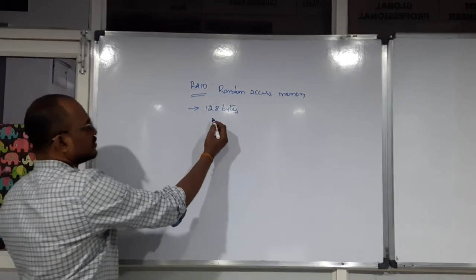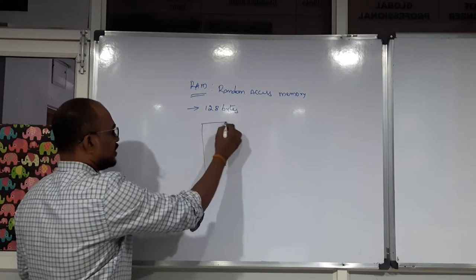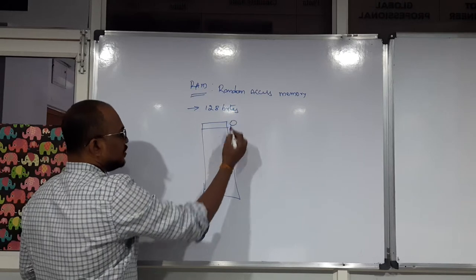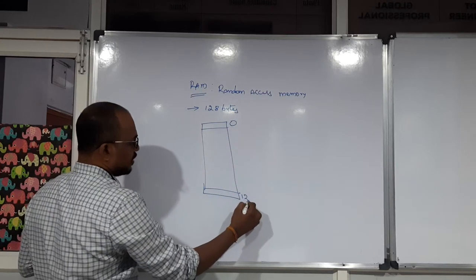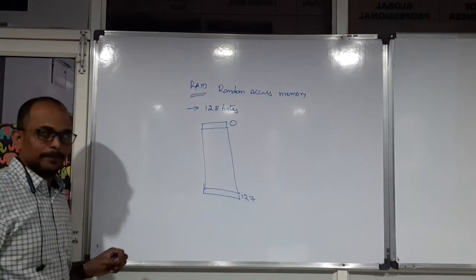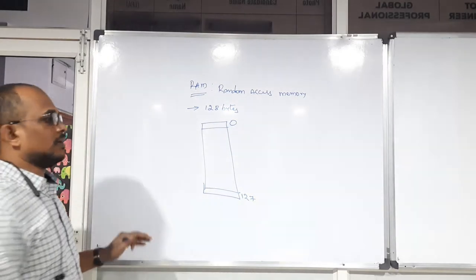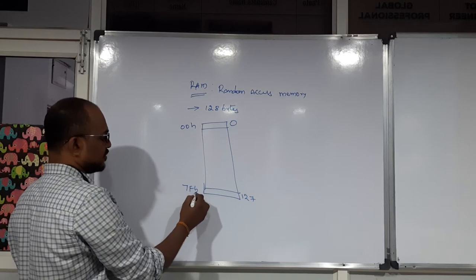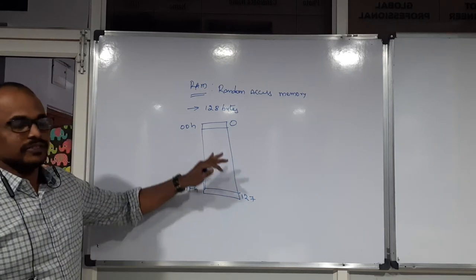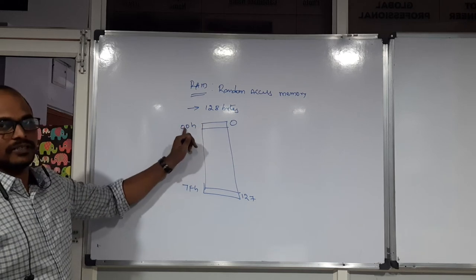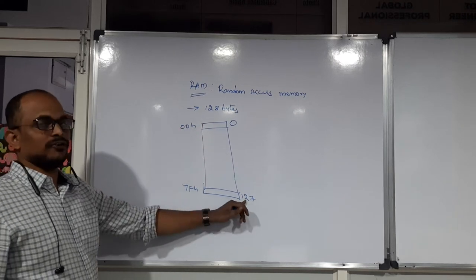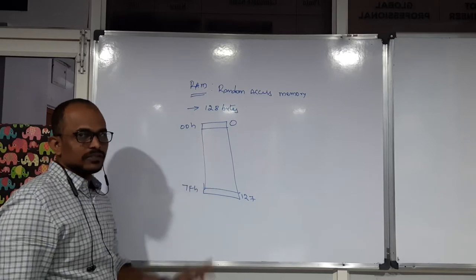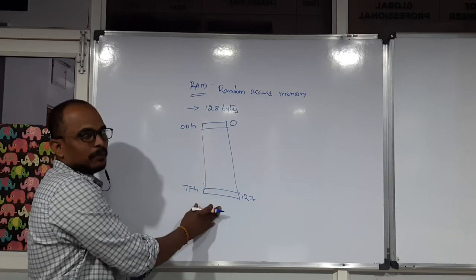You should understand the starting address and ending address of RAM memory. In decimal, 0 to 127 are the memory addresses of RAM. If you want to write this in hexadecimal format, it is 00H to 7FH — where 0 is equivalent to 00H, and 127 in hexadecimal is 7FH. This is simply the start address and end address of RAM memory.